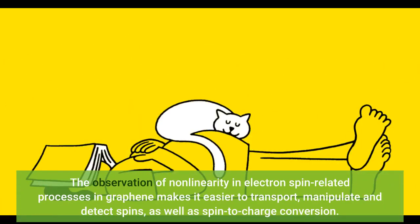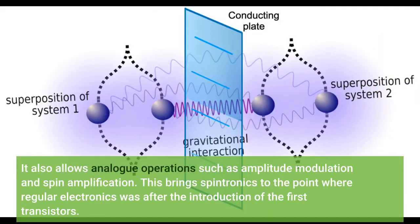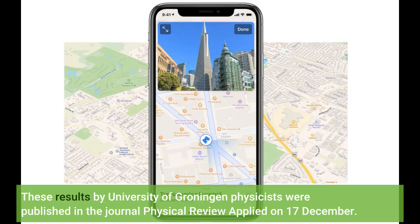The observation of nonlinearity in electron spin related processes in graphene makes it easier to transport, manipulate and detect spins, as well as spin to charge conversion. It also allows analog operations such as amplitude modulation and spin amplification. This brings spintronics to the point where regular electronics was after the introduction of the first transistors. These results by University of Groningen physicists were published in the journal Physical Review Applied on 17 December.